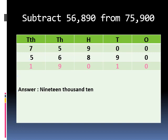Second example of 5 digit number subtraction. Subtract 56,890 from 75,900. Let's start from one's place.